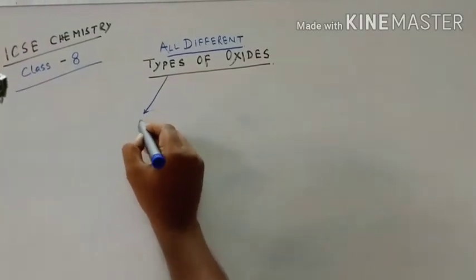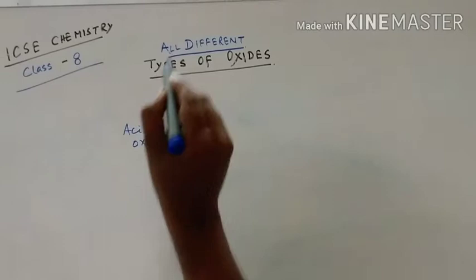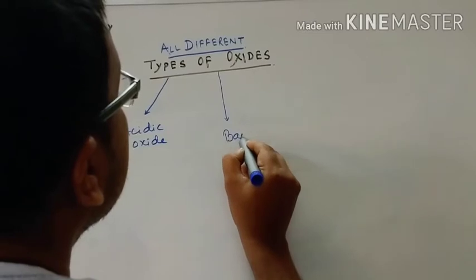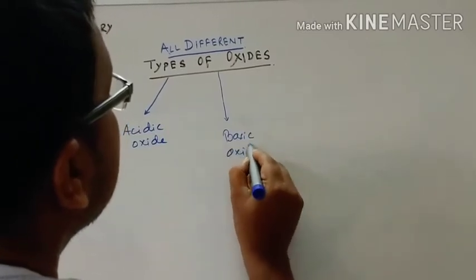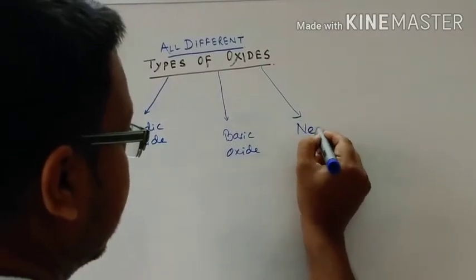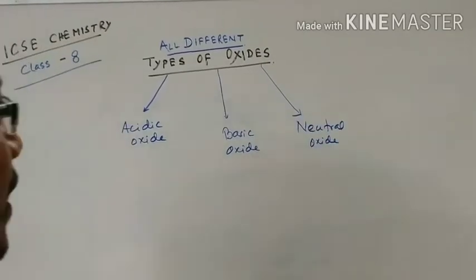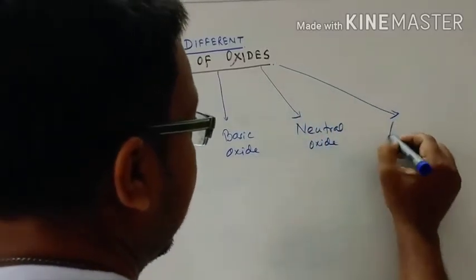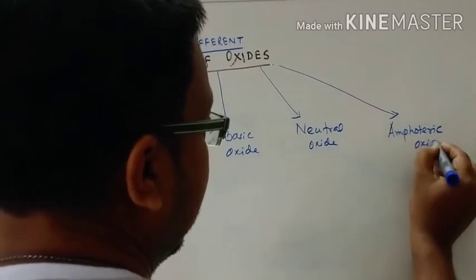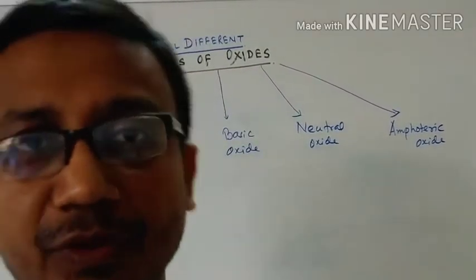I'm writing down the different types of oxides. Number one is acidic oxides, number two is basic oxide, number three is neutral oxide, and number four is amphoteric oxide. These are the four types of oxides that are present, and they are in your syllabus.